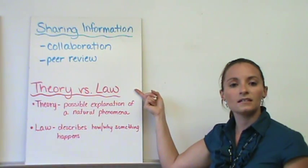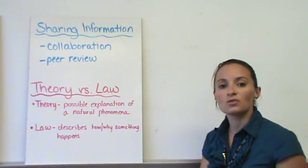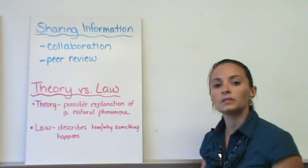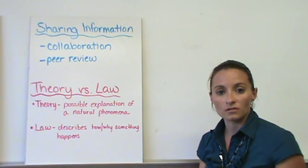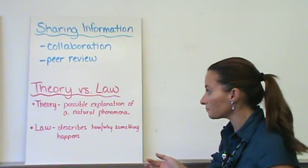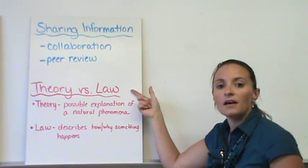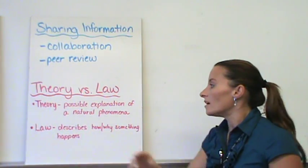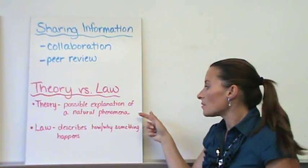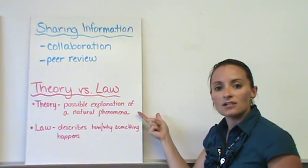Now in science, we have two words that are completely different than the real world words for those. One being a theory, and one being a law. Now a theory is a possible explanation for a natural phenomenon.